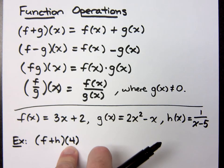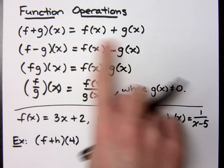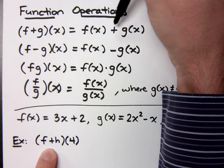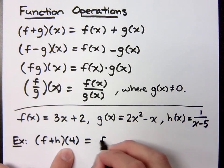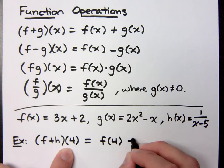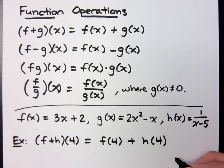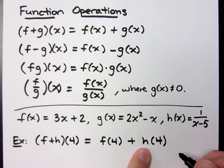That means we're not going to be using x here, we're going to be using 4. According to what I wrote up here, this is addition, so that really means I have one function plus the other function. In this case, that means f of 4 plus h of 4 — that's what it means. This is not 4f, that's not 4h, this is h of 4. This is your input value. This is not multiplication ever.